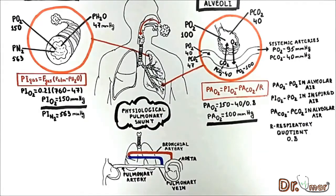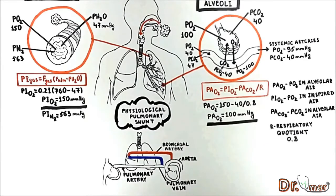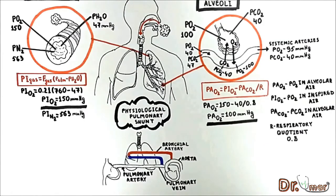The PO2 in a pulmonary vein is 100 mmHg, whereas in a bronchial vein, which is coming after supplying lung with oxygen, the PO2 is 40. This mixed blood then flows to the heart and will be pumped to the aorta. This is why the PO2 in a systemic artery is slightly lower than the alveolar PO2. Due to this mixture, the PO2 may drop down to 95 mmHg.